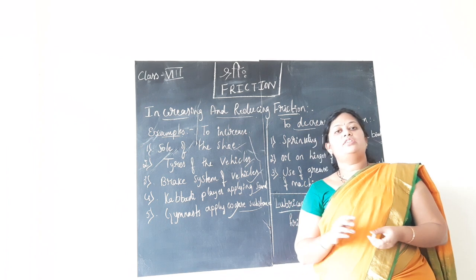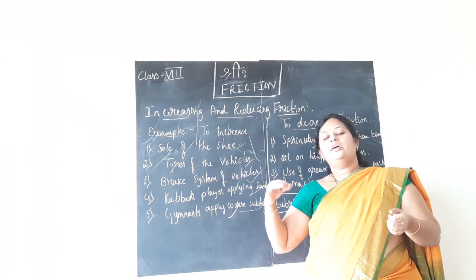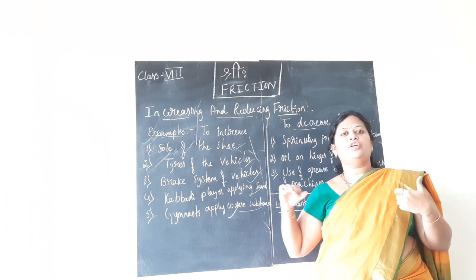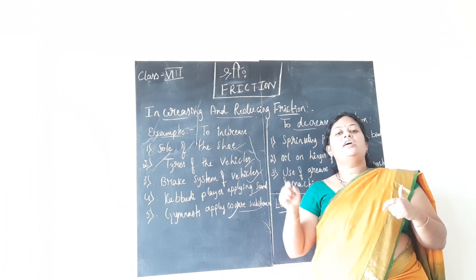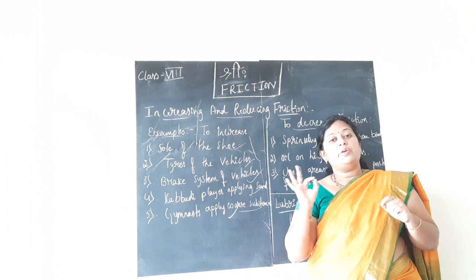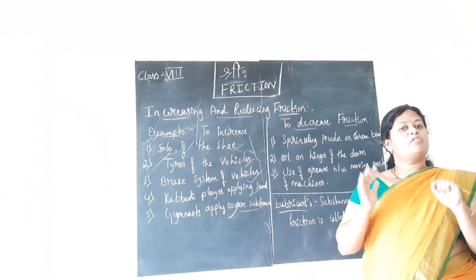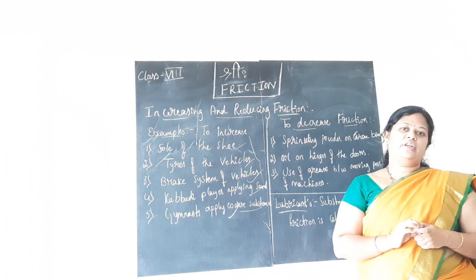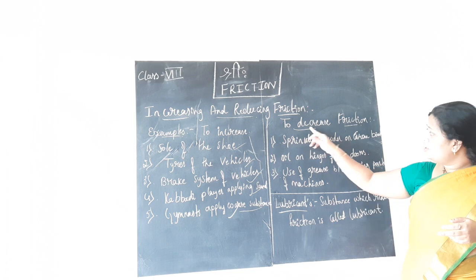You might have experienced opening or closing the gate of your house. Sometimes what will happen is it becomes too tight. Then what your father might do is apply some oil to the hinges of the gate, so that it will move smoothly. Even if the door or gate is making too much noise, it is oiled or greased for smooth movement and also to reduce the cracking sound that comes when it is opened or closed. This is one example of reducing friction.